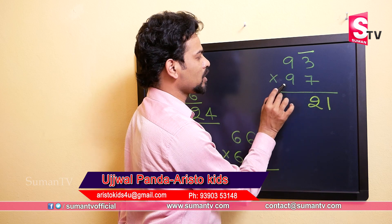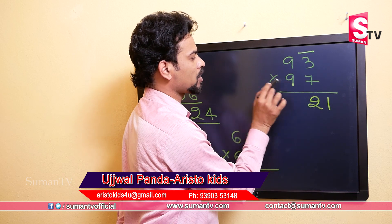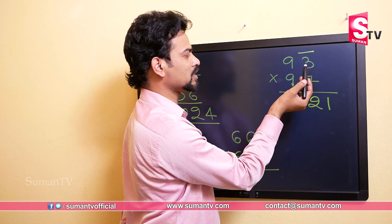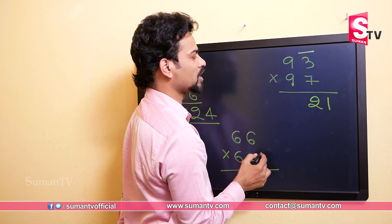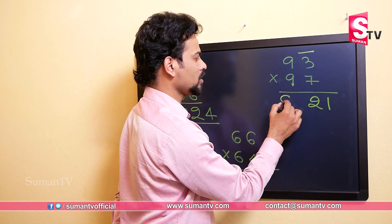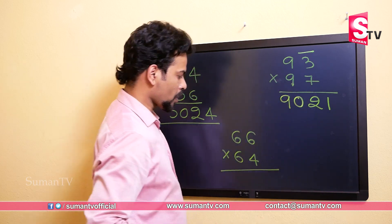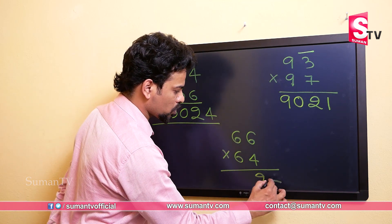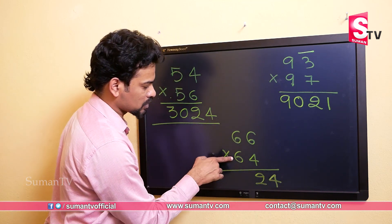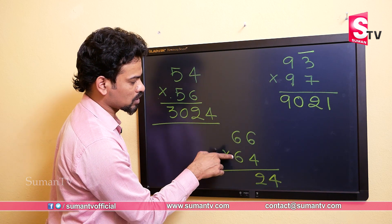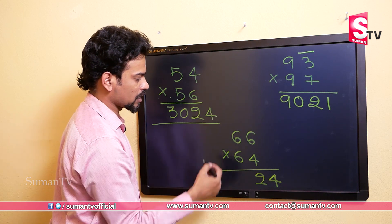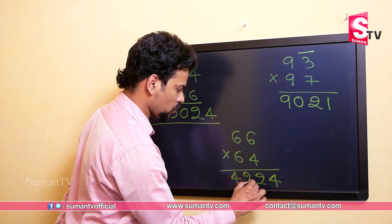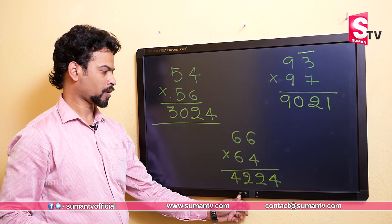For 93×97, the second step: 9 multiplied by its successor, which is 10, so 9 multiplied by 10 is 90. Answer: 9021. For 66×64: unit into unit is 6 into 4, which is 24. The tens digit is 6, and 6's next digit is 7, so 6 multiplied by 7 is 42. Answer: 4224.